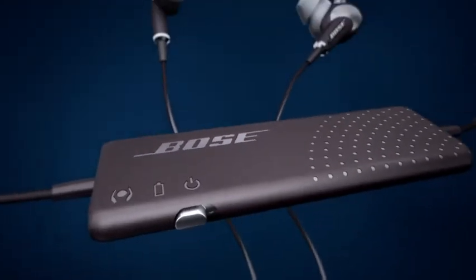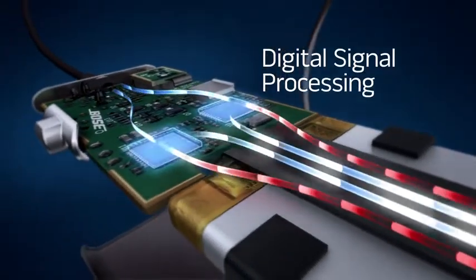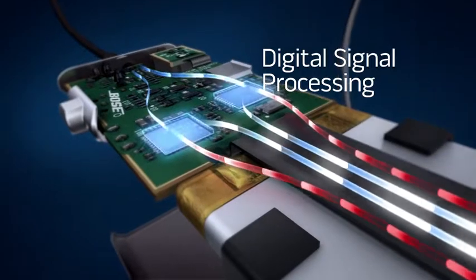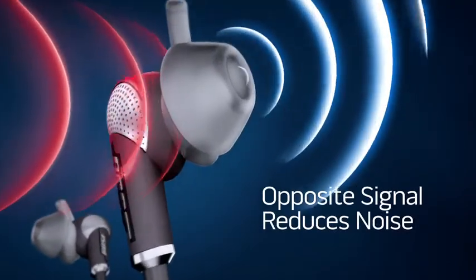Bose exclusive digital signal processing compares those sounds to what you're listening to, like music, movies, or a little peace and quiet, and reacts instant by instant to produce an opposite signal that reduces the sounds you don't want to hear.